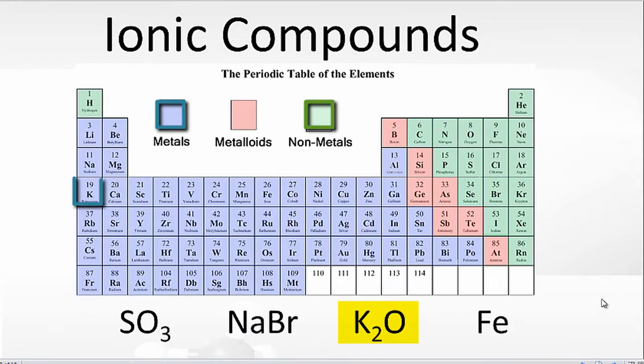For K2O, K, which is potassium, that's a metal, and then oxygen is a non-metal. Metal and non-metal, that's ionic.